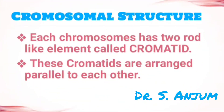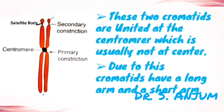Each chromosome has two rod-like elements called chromatids. These chromatids are arranged parallel to each other. In the picture you can see the structure of a chromosome — there is a pair of chromatids and two constrictions. There is a primary constriction where the centromere is present, which is almost in the middle, though the position of the centromere is variable in different chromosomes.